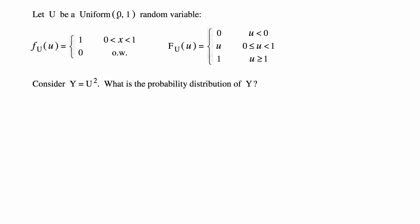It says let U be a uniform random variable and then it gives you the PDF and the CDF.